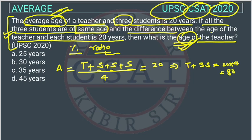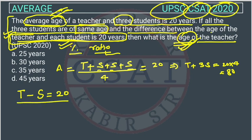Now, what else is given? The difference between the age of the teacher and each student is 20 years — so T minus S equals 20. We now have two equations and two variables, so we can solve it easily.